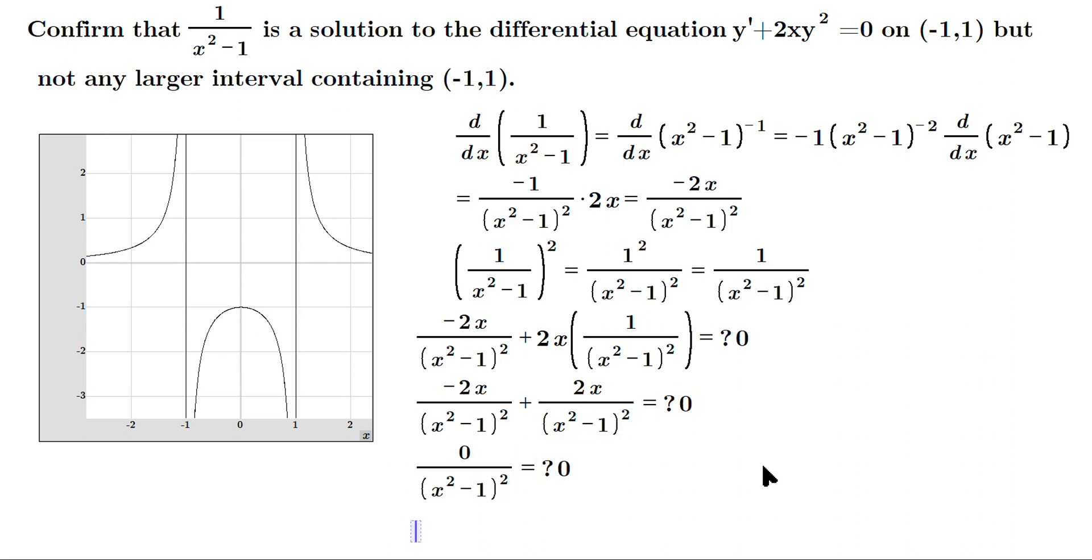0 divided by whatever here is 0, and 0 does equal 0, so it's true. In other words, 1/(x²-1) solves the differential equation. However, if you try to do it over anything larger than -1 to +1, then you'd be including these vertical asymptotes where the functions aren't defined and it doesn't work.